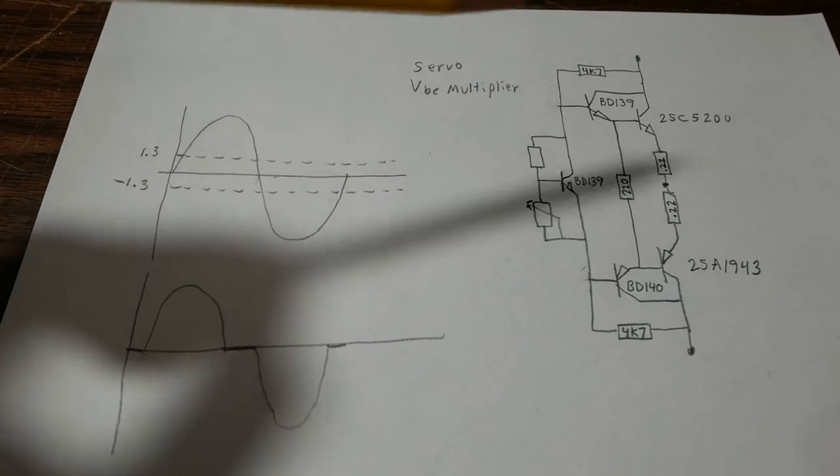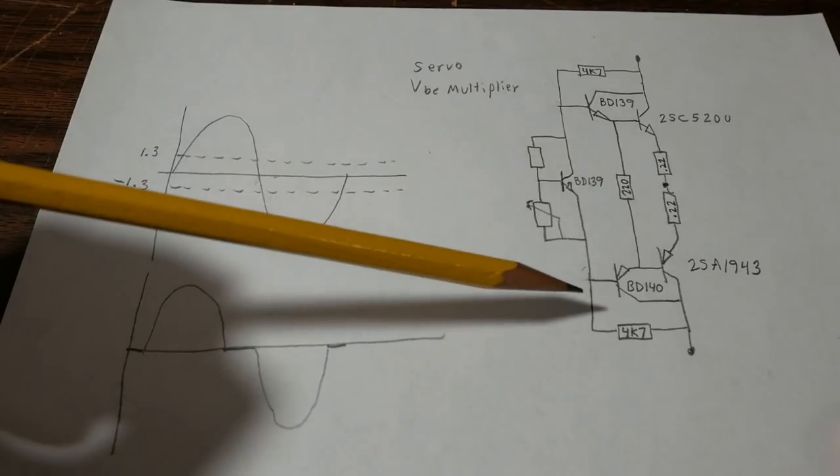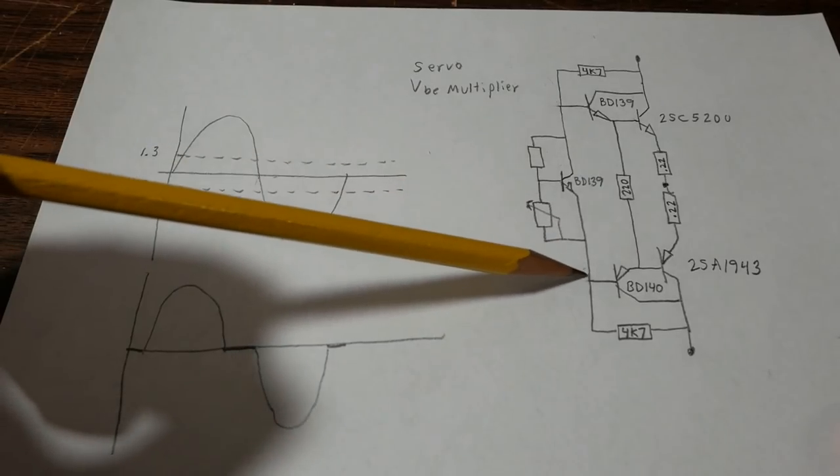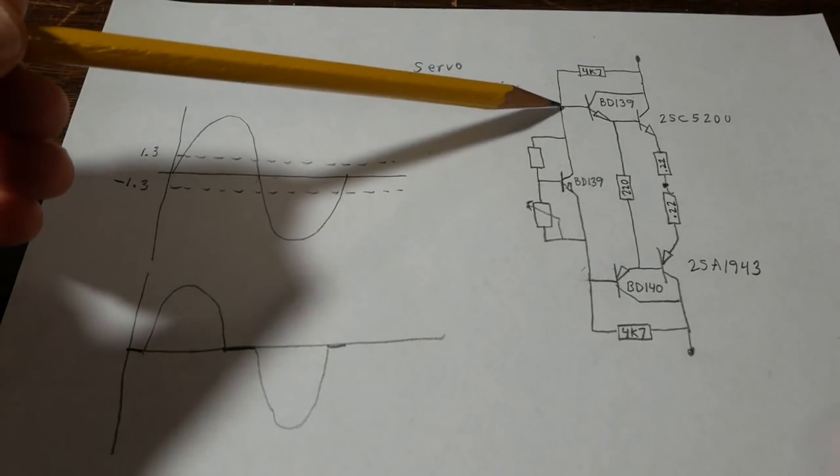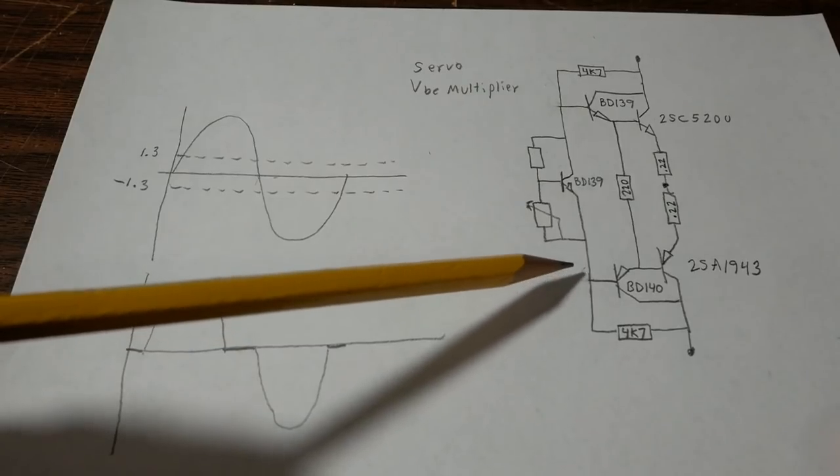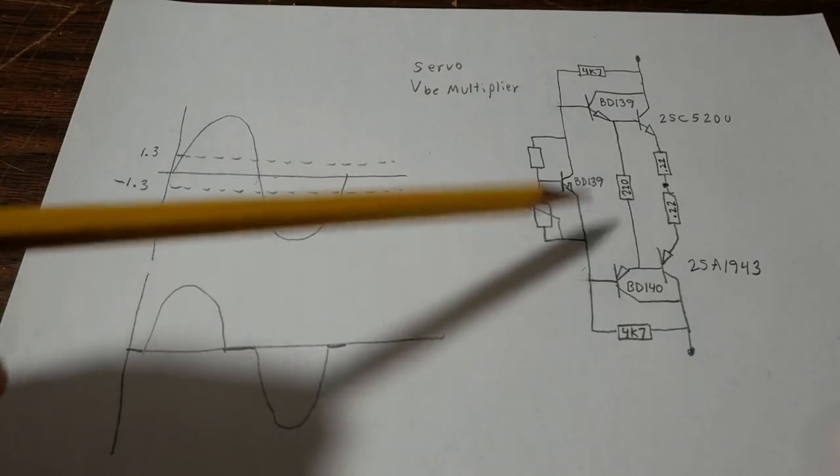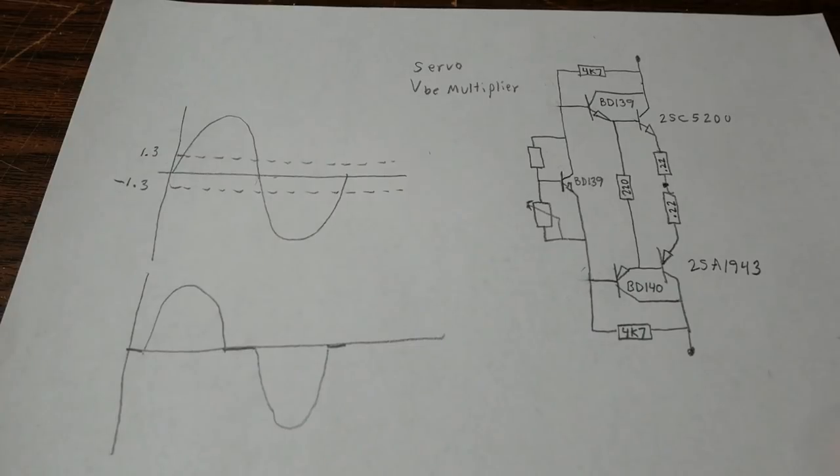So let me explain more about crossover distortion. Let's say that we just shorted these two bases together and we put a signal on the bases of these transistors. Well because they're shorted together it's going to see the same voltage.